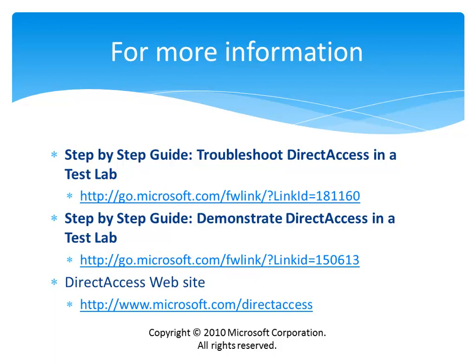For this document, please search for the document titled Step-by-Step Guide: Troubleshoot Direct Access in a Test Lab, or go to the URL indicated here. This document uses a base working Direct Access test lab configuration as defined in the Step-by-Step Guide: Demonstrate Direct Access in a Test Lab, and serves as a companion to that guide. For a copy of that guide for the base configuration, search for the title or go to the URL indicated here.